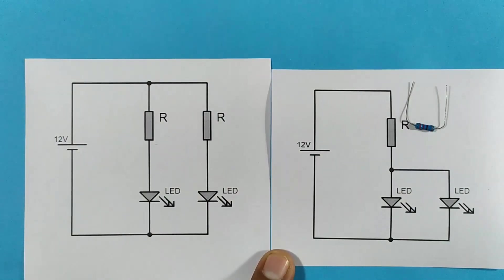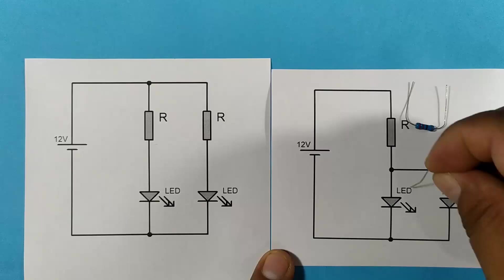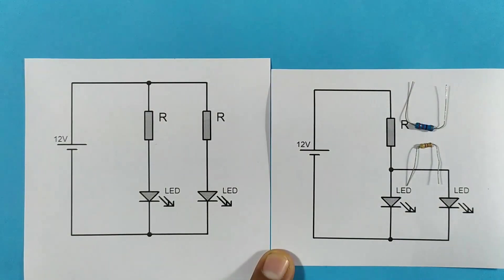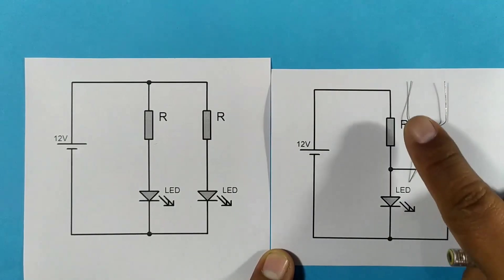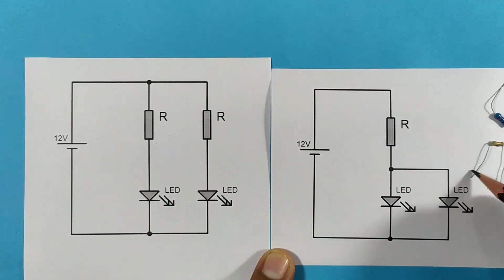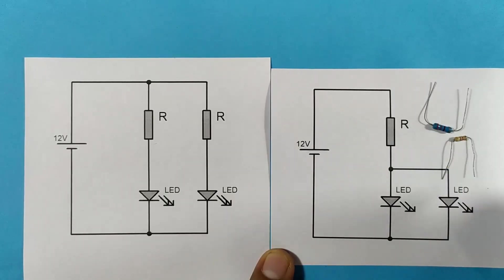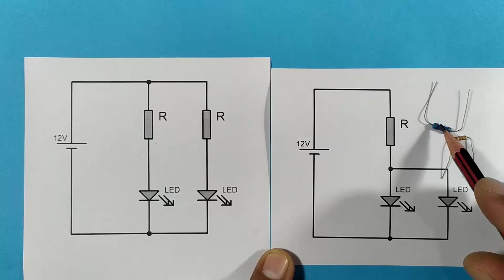That is to say, we would have to use a larger one instead of a quarter watt so that it does not burn out. The same would happen if you added more LED diodes. If you put another LED diode, you would have to increase the power of your resistor and reduce its value based on the number of LEDs you have.